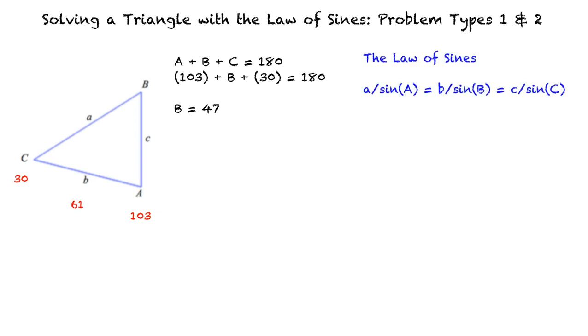The Law of Sines states that a over sine of A equals b over sine of B equals c over sine of C. Using the given value of b equals 61, we can find a. A equals 81.3 approximately. We will use a similar method to find the side length c.